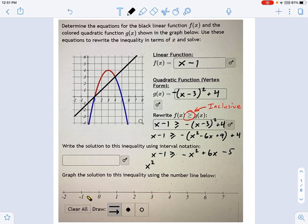I'm going to subtract 6x over. So this gives me, now, x minus 6x, that gives me minus 5x. And I'm going to add 5. So negative 1 plus 5 equals plus 4.